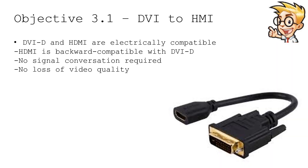Here's an example of an adapter that converts between electrically compatible systems. DVI-D, which is the digital version of DVI, is electrically compatible with HDMI, which is also a digital medium. These can be a single adapter as seen here, or it might be a cable that has the DVI-D connector on one side and the HDMI connector on the other. You don't have to have any type of converter in the middle — there's nothing that needs to be powered. You simply connect these together and transfer the signals.